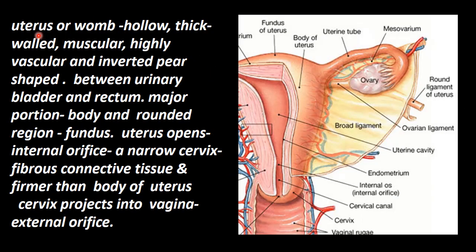The uterus, also called the womb, is hollow and thick-walled, made of muscles — muscular and highly vascular with a rich blood vessel supply. Its shape is an inverted pear shape.